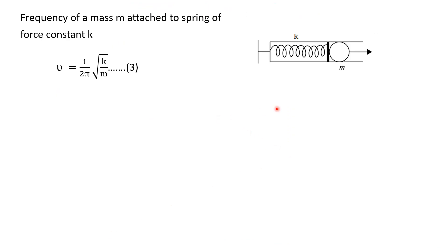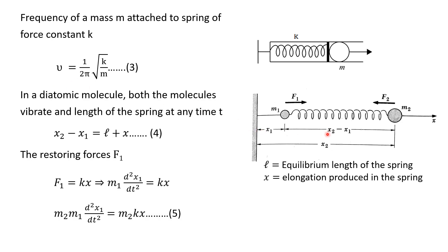The frequency of a simple harmonic oscillator for a mass attached to a spring is given where the spring constant k is given by this relation. In the diatomic molecule we have two atoms attached to each other — one with mass m1 and the other with mass m2. If the position vector of mass m1 is x1 and of mass m2 is x2, the instantaneous separation between the two masses is x2 minus x1. If l is the equilibrium length of the spring and x is the elongation, then the separation x2 minus x1 equals l plus x.